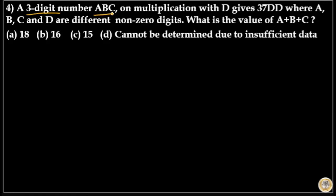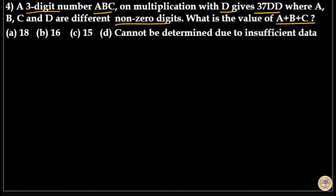A three-digit number ABC multiplied by D gives 37DD, where A, B, C, D are different non-zero digits. What is the value of A plus B plus C? Here ABC is a three-digit number, and multiplying it by D gives you 37DD. We need to find out the sum of digits of ABC.